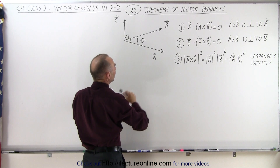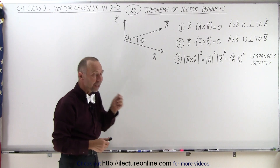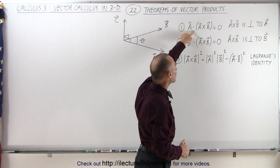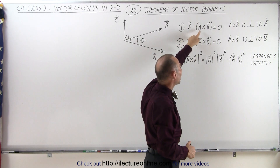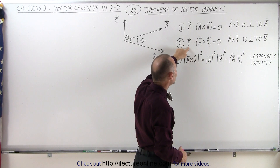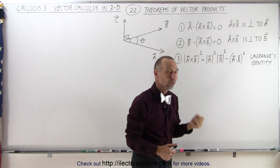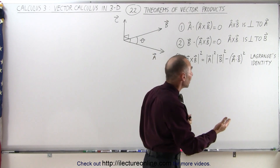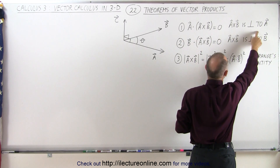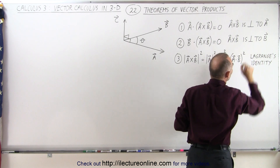When we do the cross product of a and b, we get a third vector c which is perpendicular to both a and b. Because of that, the first theorem states that if we take vector a and do a dot product with the cross product of a and b, that should equal zero. Likewise, when we take vector b and do a dot product with the cross product of a and b, we should also get zero.